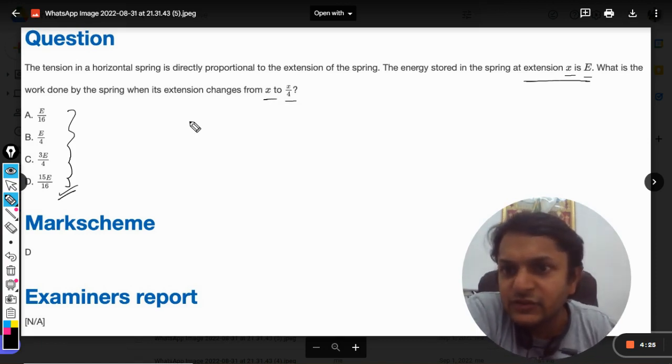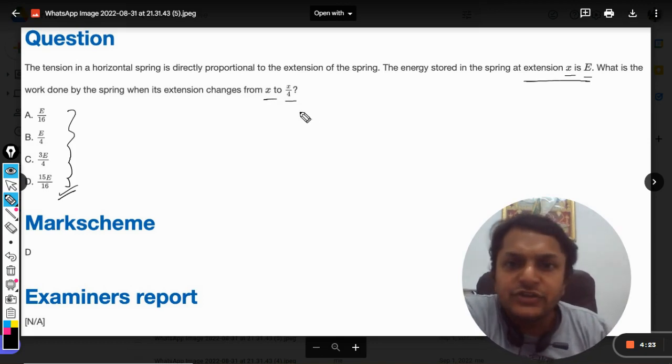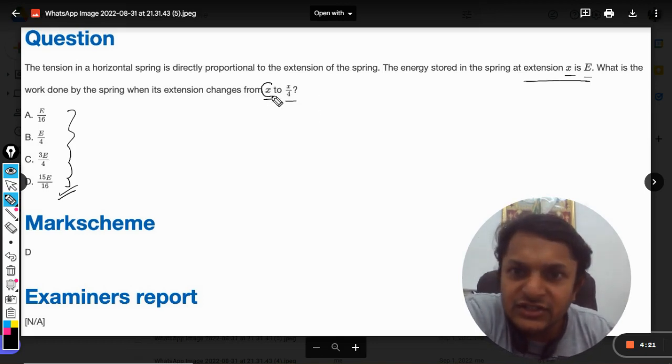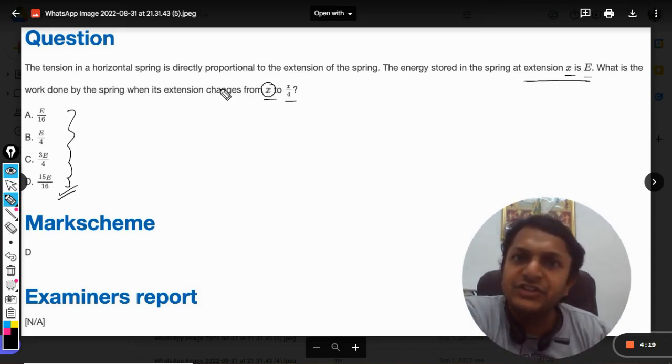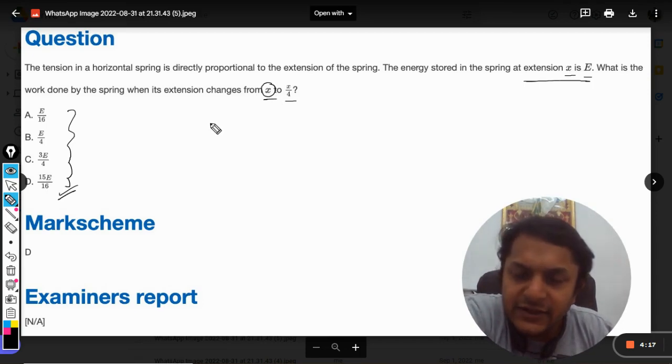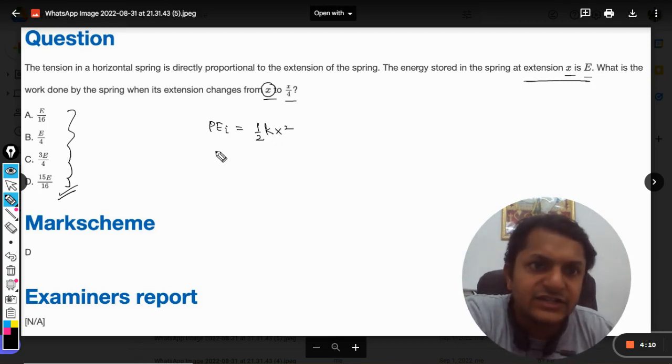So first of all, this is the initial state when the extension is x. I can say that the initial potential energy will be half k x squared, and this will be taken as E.